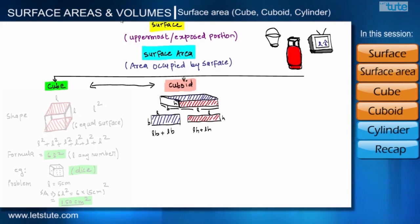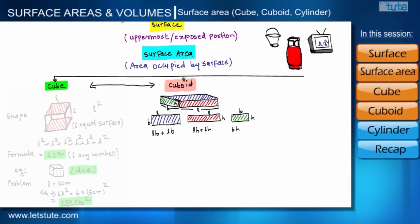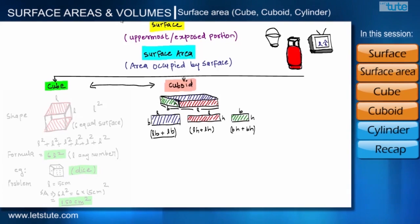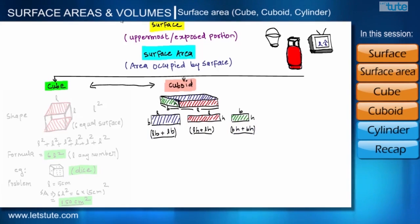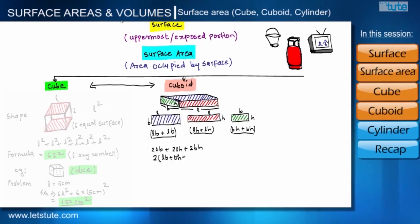Since there are two surfaces — front and back — we add LH twice. The left surface has sides B and H, so its area is B into H. Since there are two surfaces — left and right — we add BH twice. So the total surface area becomes LB + LB + LH + LH + BH + BH, which simplifies to 2(LB + BH + LH).